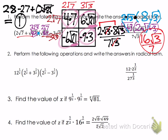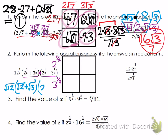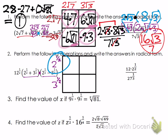In question 2, we have another set of binomials being multiplied together, so we set up the box again. This time I'll show how to do it using exponential form instead of radical form. Keep in mind you can rewrite the entire thing in radical form — √12 times (√2 plus √3) times (√2 minus √3) — and follow the same procedures as problem 1. But I want to explain the exponent laws approach, keeping everything in exponential form.